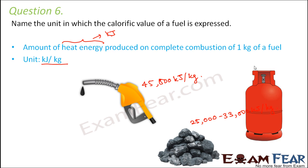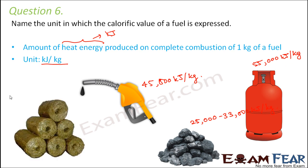For LPG, the calorific value is 55,000 kilojoules per kg, so 1 kg of LPG on complete combustion will produce 55,000 kilojoules of heat energy. Biogas has a calorific value of 35,000 to 40,000 kilojoules per kg.